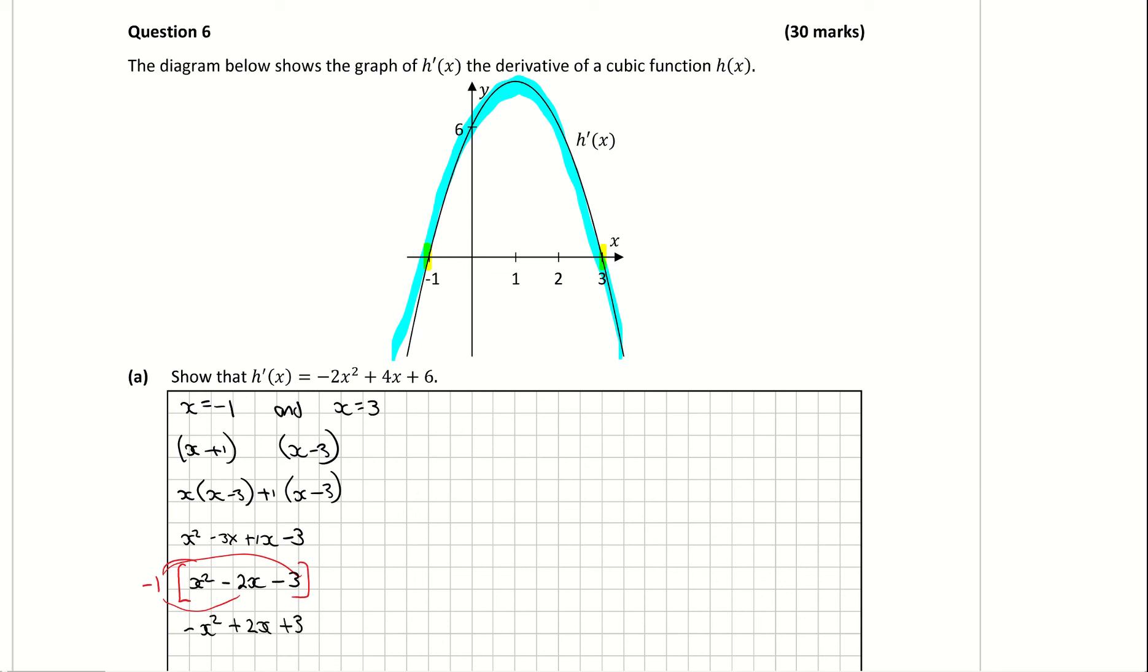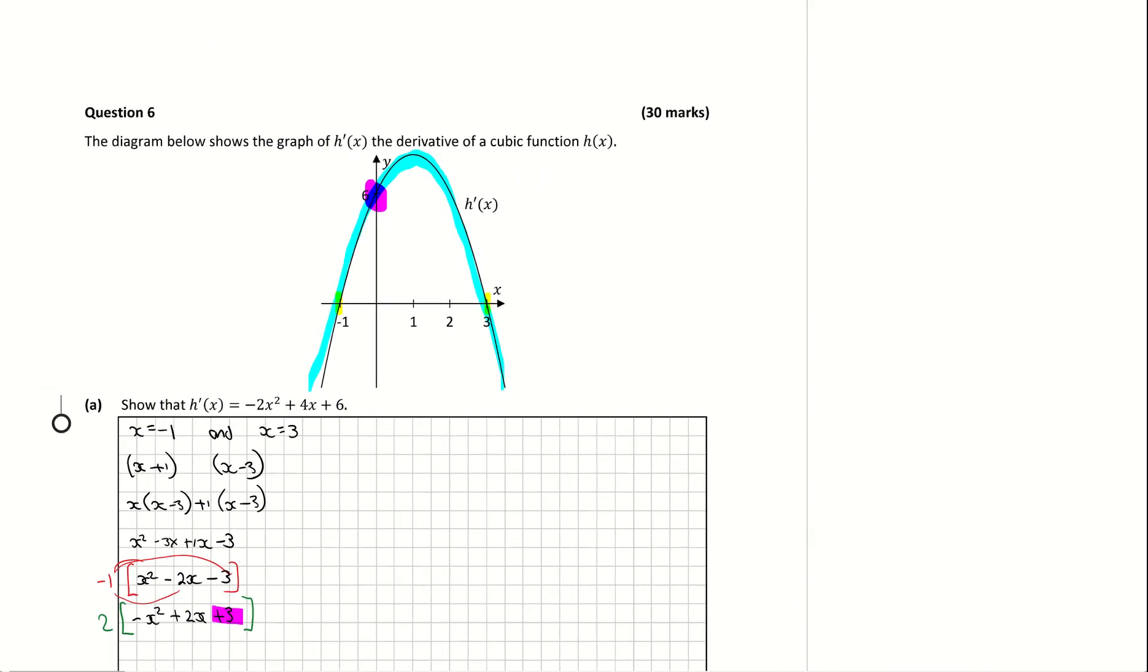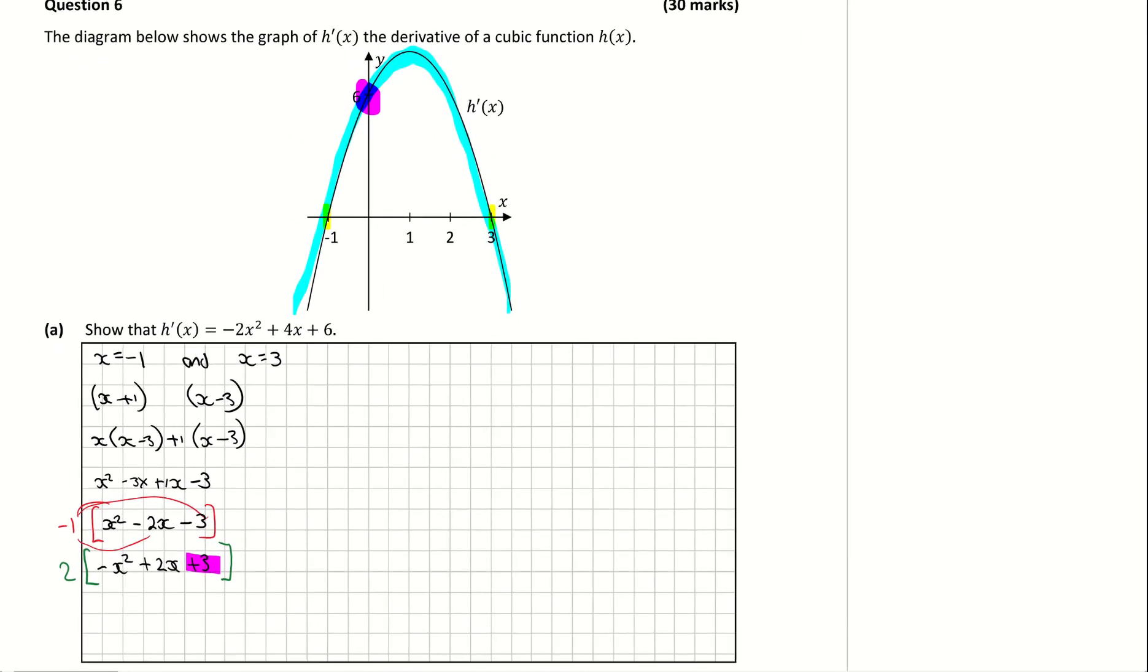Now we can also see that it's crossing the y-axis, the y-intercept is at 6. But as I look at my quadratic, it's positive 3. So I need to multiply that by a scale factor. In order to get from 3 to 6, I need to multiply by 2. So when I multiply in 2, I'm getting -2x² + 4x + 6.